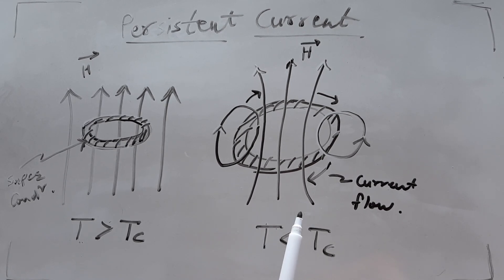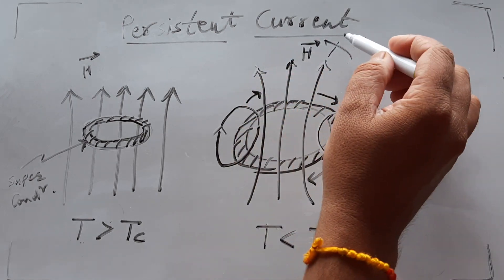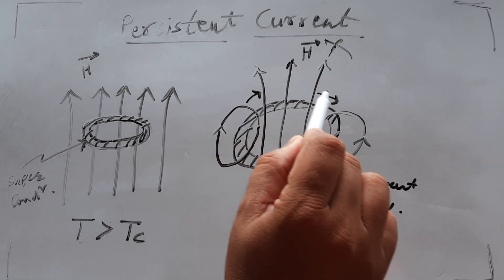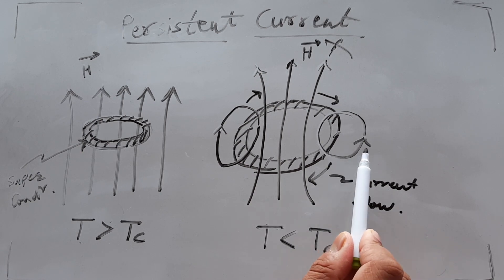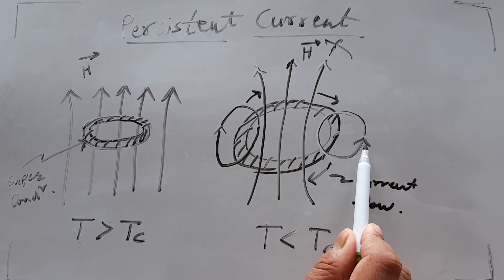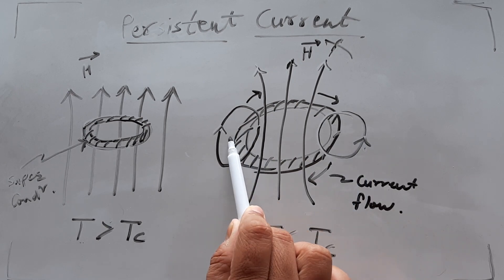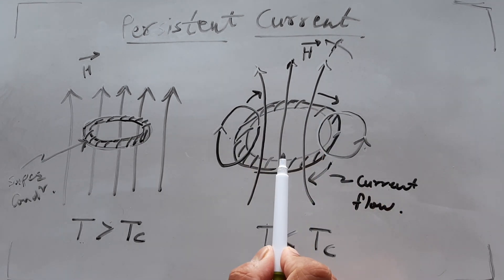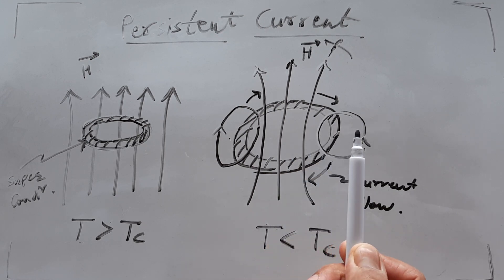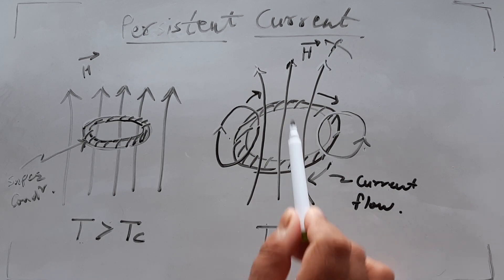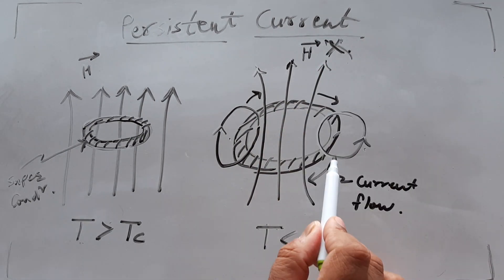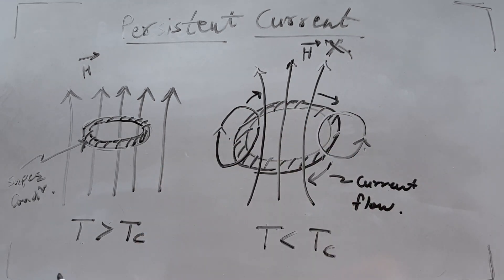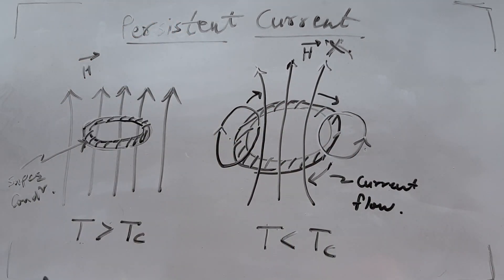Now the interesting thing is: suppose you switch off this external magnetic field. Even if you switch off the external magnetic field, this induced current keeps flowing. This is a superconductor, meaning resistance is zero — the current is already flowing. So even with the external field switched off, this current has no resistance and will keep flowing for a very, very long time. This is called persistent current.